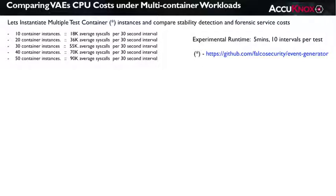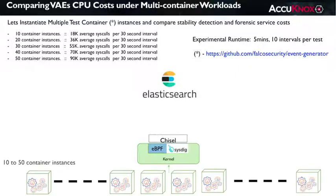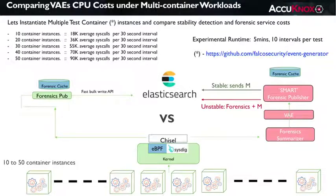Sysdig produced a separate forensic log per container, so the idea is to record those logs into our forensic repo, which was implemented using Elasticsearch. A baseline forensic publisher was then fed the stream, cached the events locally, and then used the Elasticsearch FastBulkWrite API to push the records to the Elasticsearch server. Then, we ran the same experiment using the VAE-optimized forensic publisher. Let's check out the results.